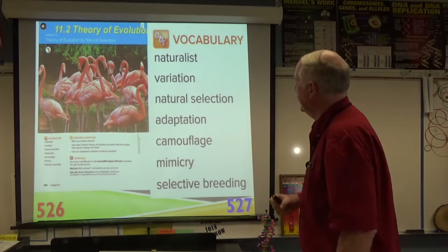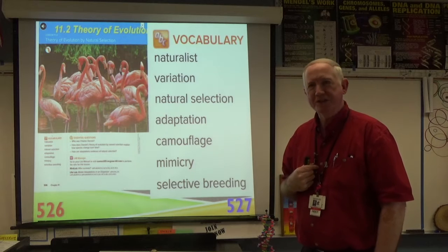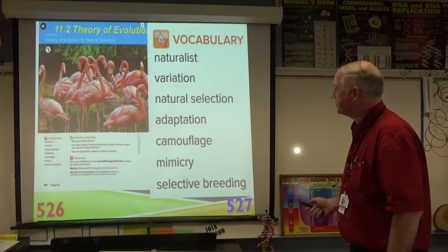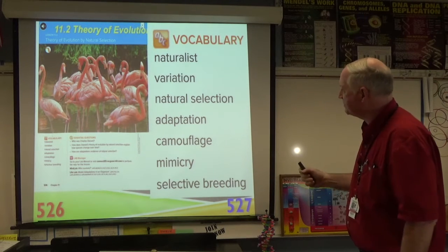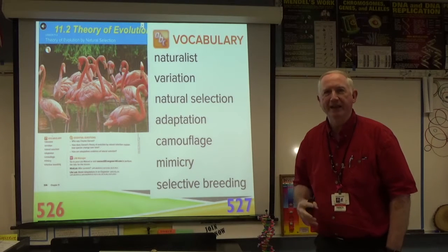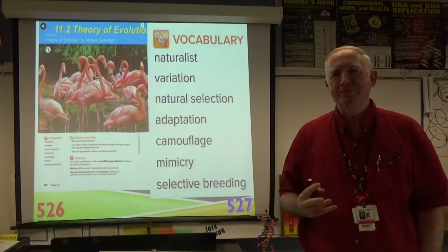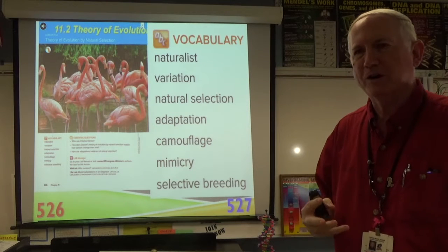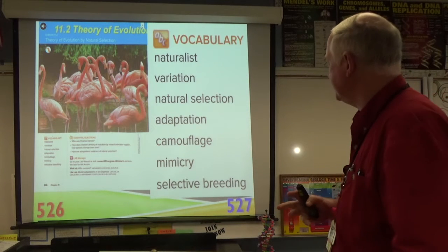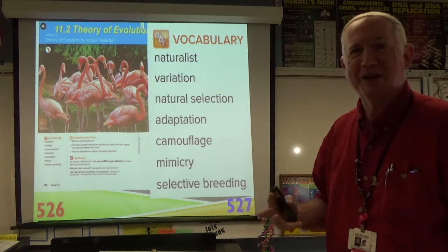Our vocabulary words for Section 2 include naturalist, variation, natural selection, adaptation, camouflage, mimicry, and selective breeding. All of these words you may have heard in conversation at some point, except probably for selective breeding.